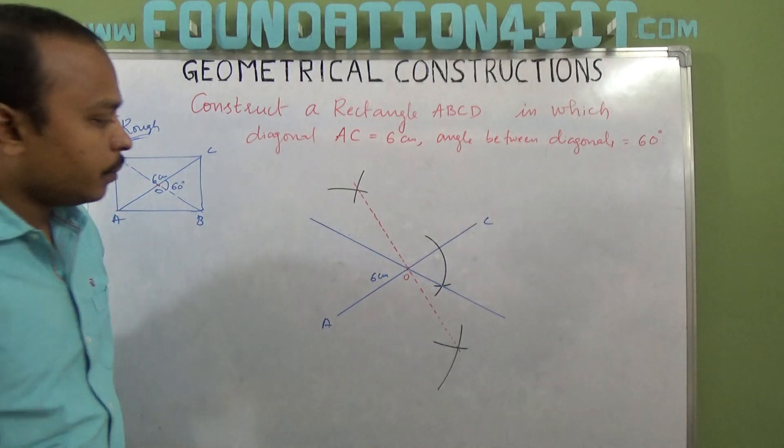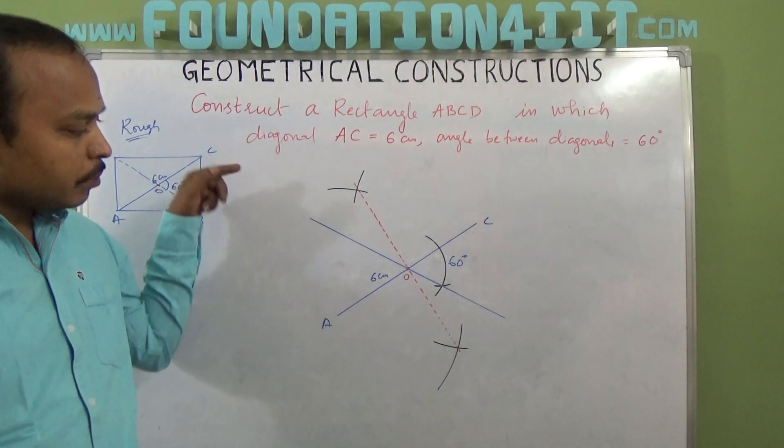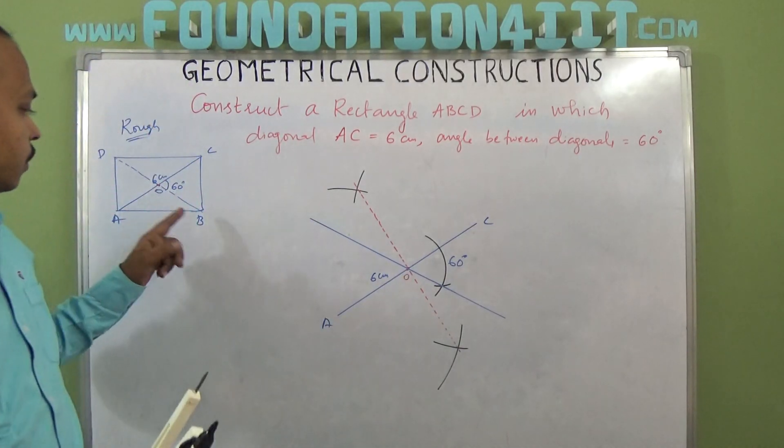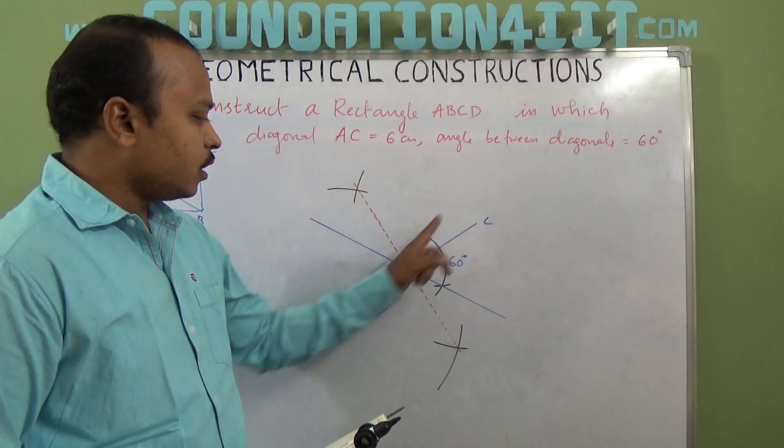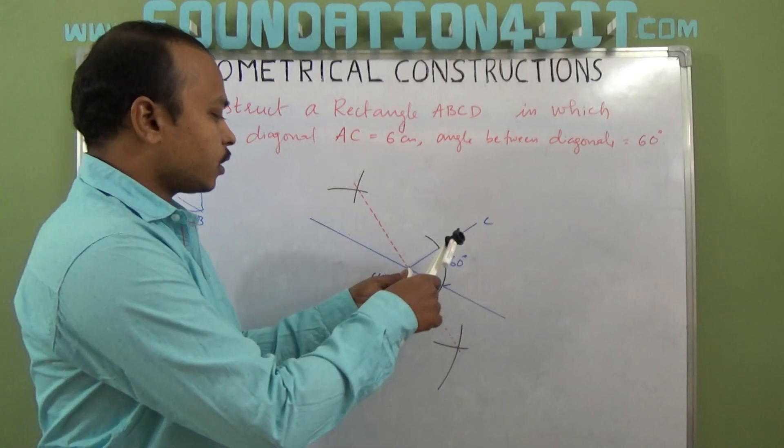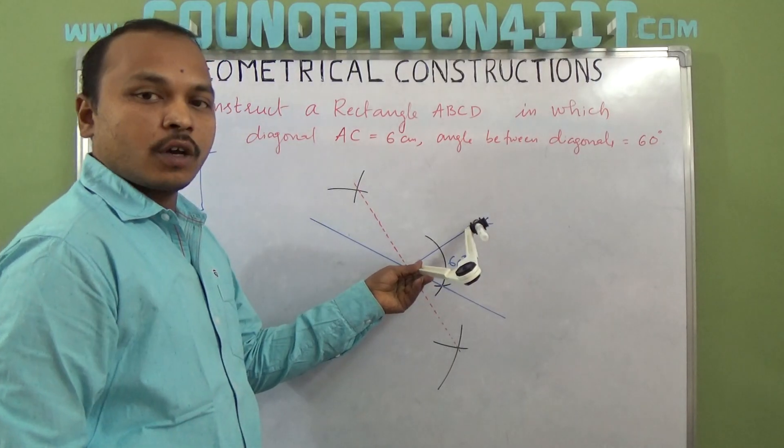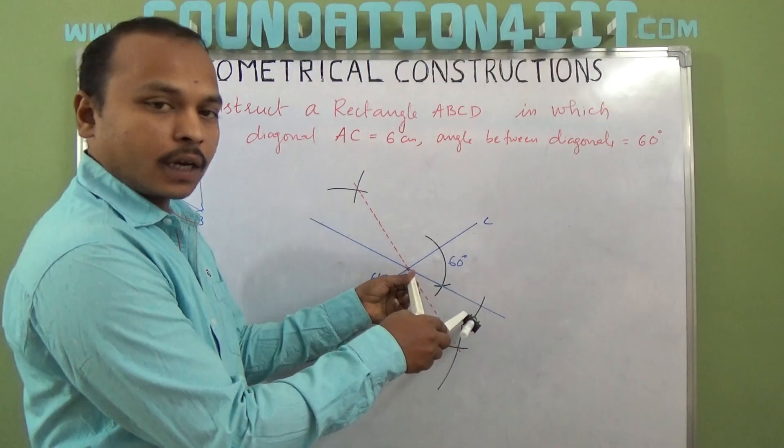Now angle between diagonals is 60 degrees. AC is one diagonal and this is one more diagonal. On another diagonal we need to find out vertex B and D. If you observe, O to C and O to B are the same distance. Keep your compass, take the compass and check from O to C how much distance, and the same you can cut this arc.